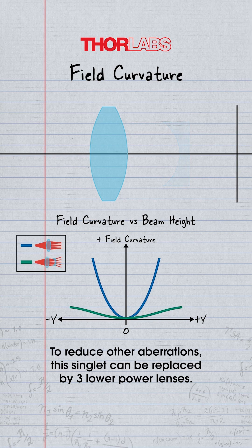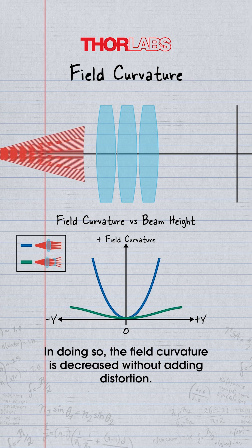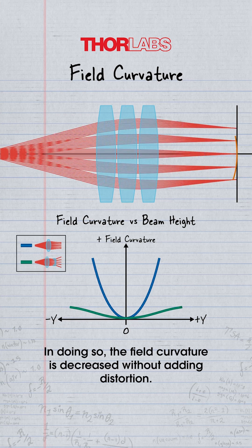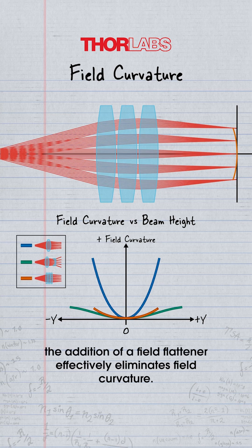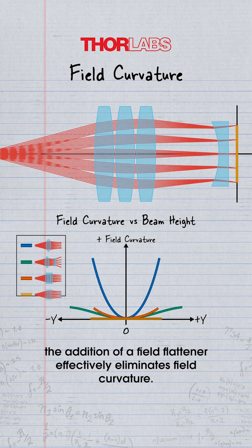To reduce other aberrations, this singlet can be replaced by three lower power lenses. In doing so, the field curvature is decreased without adding distortion. And with the other aberrations reduced, the addition of a field flattener effectively eliminates its field curvature.